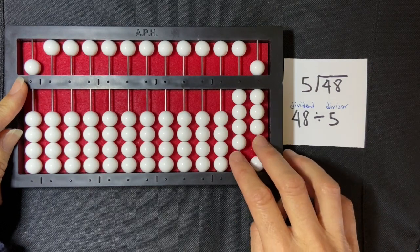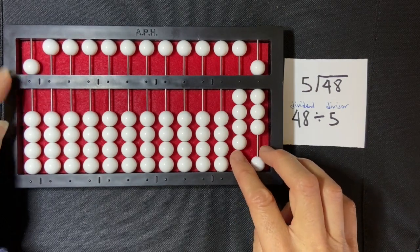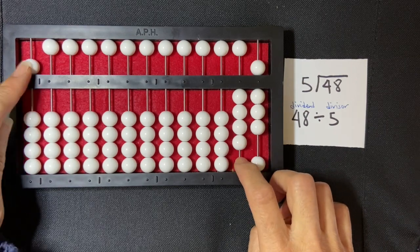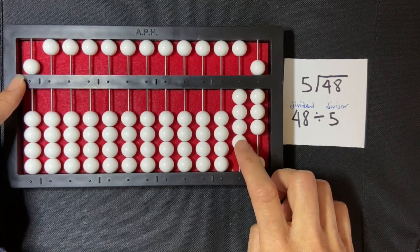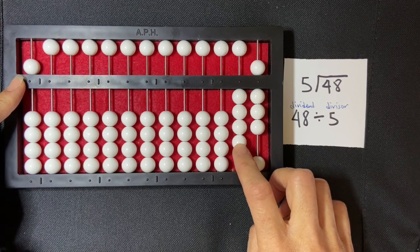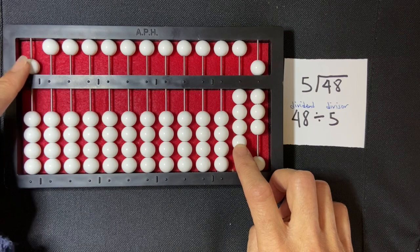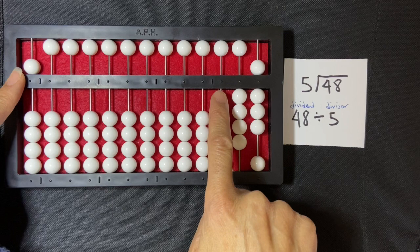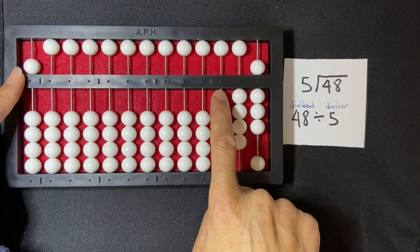Now I'm going to start by comparing the divisor to the first number in my dividend. So my divisor is 5 and the first number in my dividend is 4. Since 5 is larger than 4, I'm not going to skip a rod. I'm going to go directly to the left of my dividend.